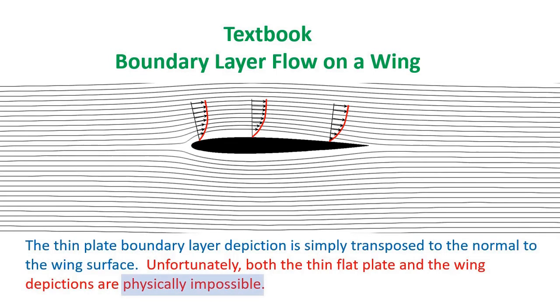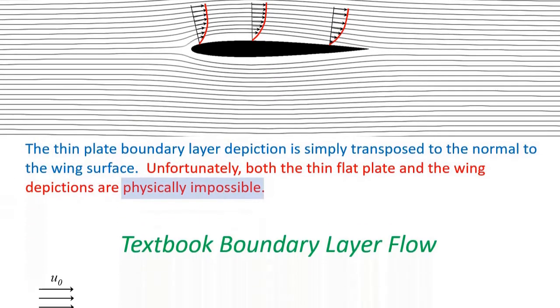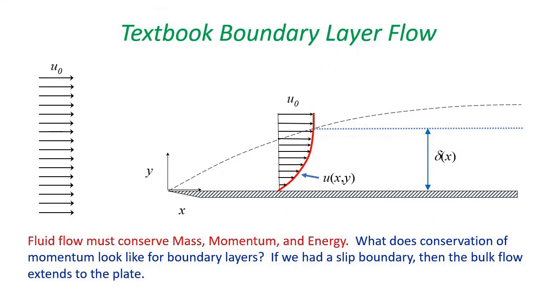The big reveal is that both the thin flat plate and the wing depictions are physically impossible. They do not happen in the way it is depicted on the plate or the wing. The problem has to do with the momentum balance. Let me explain. For fluid flow we must have conservation of mass, momentum, and energy. What does conservation of momentum look like for boundary layers?